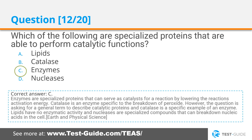Correct answer C. Enzymes are specialized proteins that can serve as catalysts for a reaction by lowering the reaction's activation energy. Catalase is an enzyme specific to the breakdown of a peroxide. However, the question asks for a general term to describe catalytic proteins, and catalase is a specific example of an enzyme. Lipids have no enzymatic activity, and nucleases are specialized compounds that can break down nucleic acids in the cell.